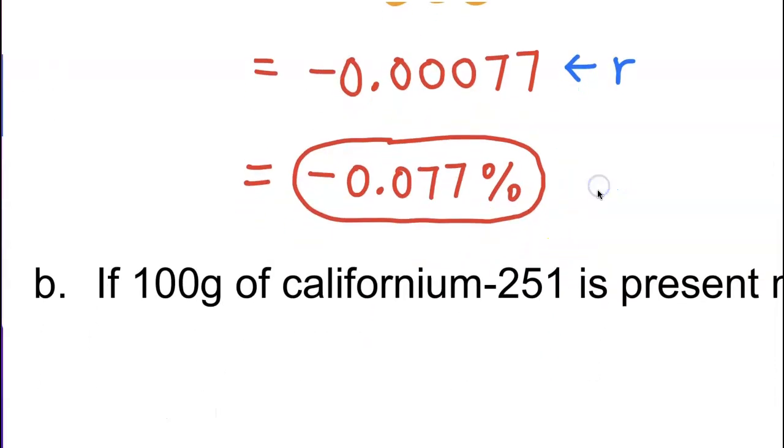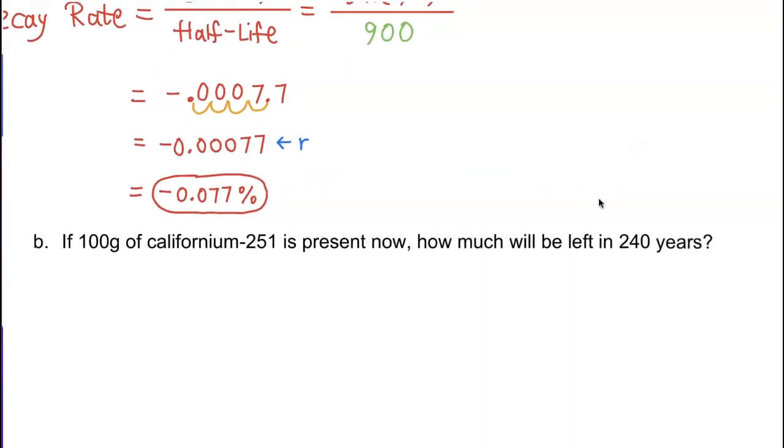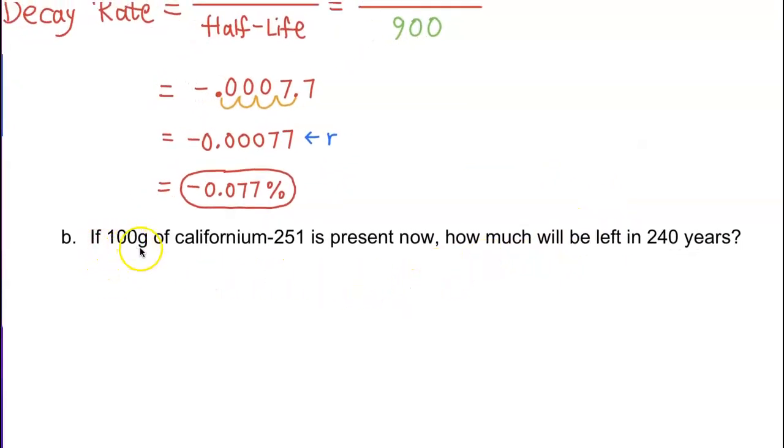Let's go to part B. Part B is asking if 100 grams of Californium-251 is present now, how much will be left in 240 years?